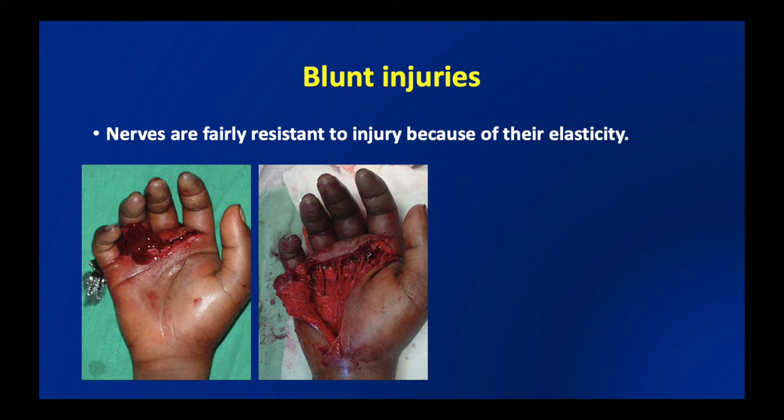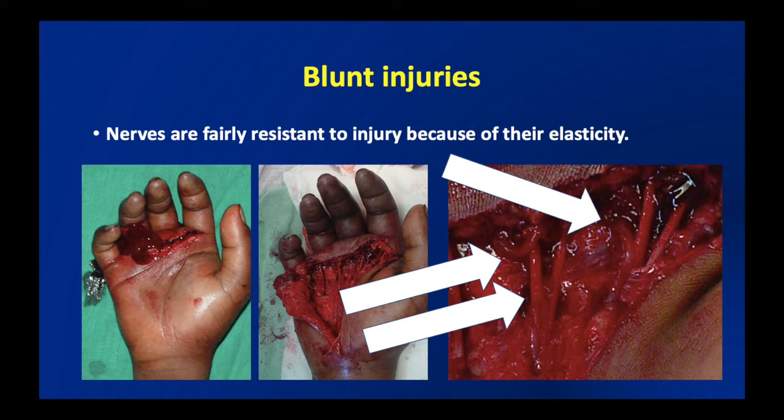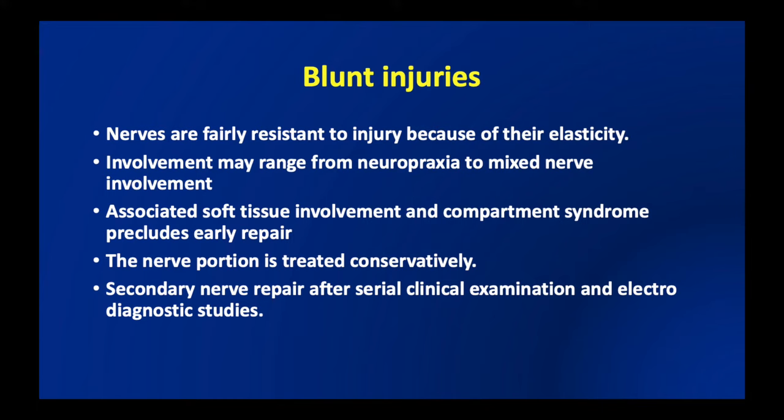When there has been a blunt trauma leading to a burst wound, the nerves are usually resistant to injury because of their elasticity, as shown in this patient who had a fall of a heavy object on the right hand — exploration revealed rupture of the digital arteries but the digital nerves were found to be intact. However, nerve involvement may range from neuropraxia to mixed nerve involvement, and the associated soft tissue involvement and compartment syndrome may preclude early repair. The nerve portion is usually treated conservatively, and secondary nerve repair or reconstruction after serial clinical examination and electrodiagnostic studies is recommended.